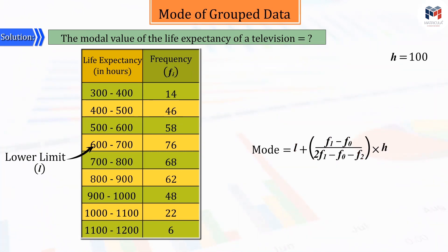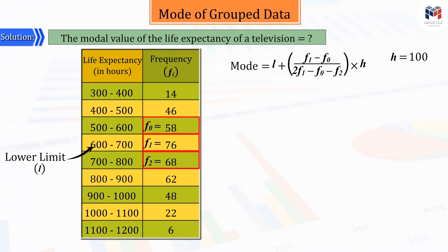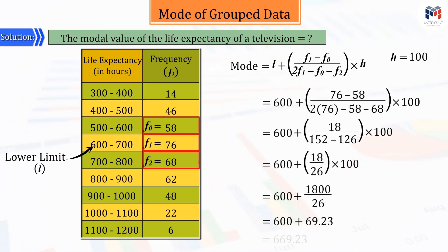Hence, the values of the lower limit of the modal class, the size of the class, the frequency of the modal class, the frequency of the class immediately before the modal class, and the frequency of the class immediately after it, on being substituted in the modal formula and on being solved, give the value of the mode as 669.23.